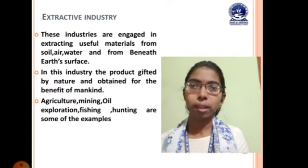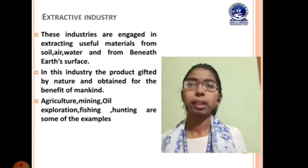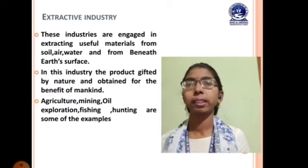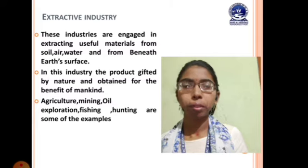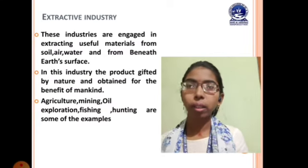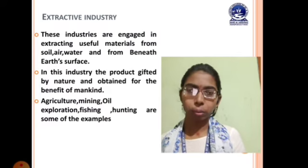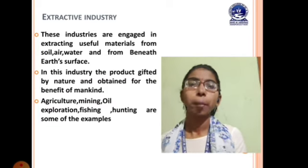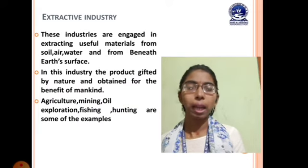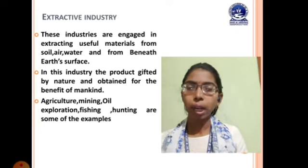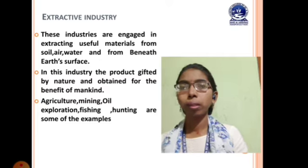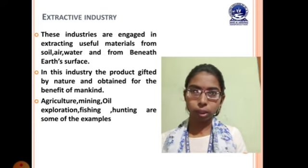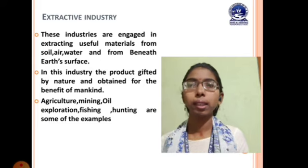The second type of primary industry is extractive industry. 'Extract' means to take out or find. These industries are engaged in extracting useful material from soil, water, air, or beneath the earth's surface. Examples include fishing, mining, oil exploration, and agriculture — where we put seeds into the earth and get vegetables in return. We are simply extracting products from natural sources.